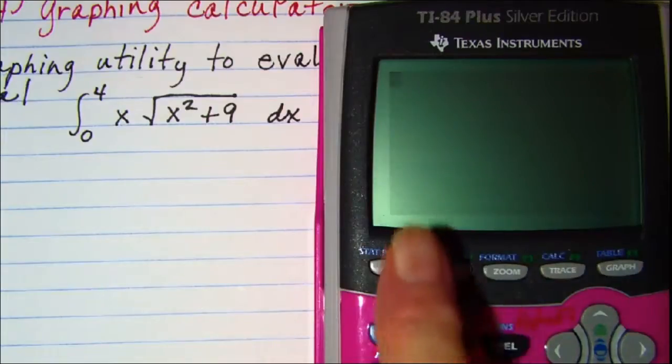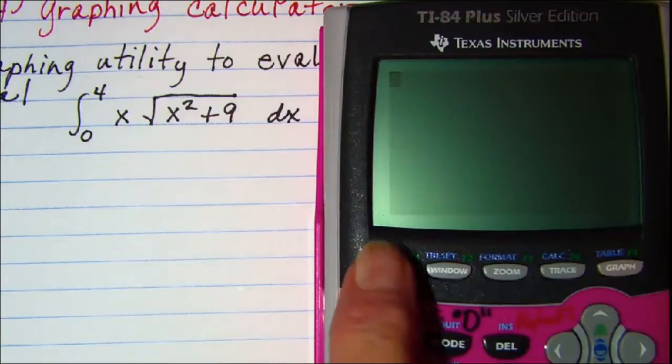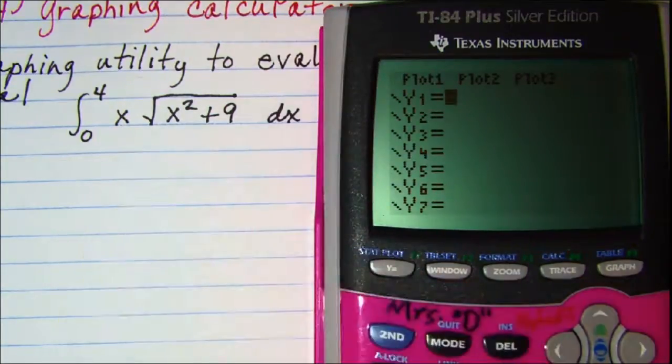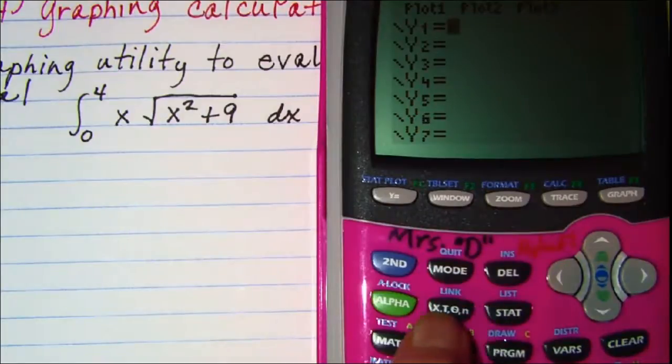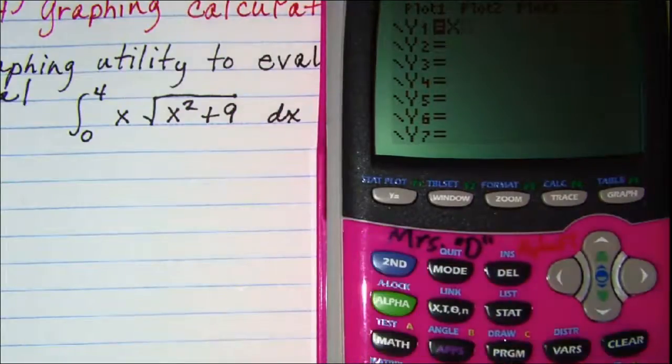The first thing to do is enter our function in the y equals window. Press y equals and enter the function x. X is right below the mode button. So x times the square root of x squared plus 9.